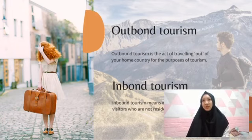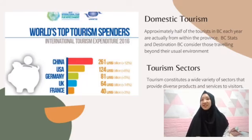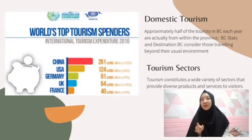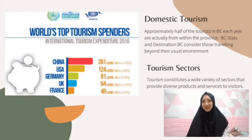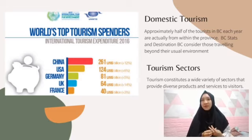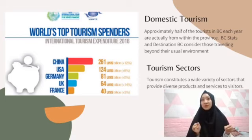Inbound tourism means visits to a country by visitors who are not residents of that country. Outbound tourism means visits by residents of a country outside that country. The third is domestic tourism. Approximately half of the tourists in BC each year are actually from within the province. BC Stats and Destinations BC consider traveling beyond the usual environment — more than 18km from home — for business or pleasure to be tourists. The last is tourism sectors, which constitute a wide variety of sectors that provide diverse products and services to visitors, but also provide products and services to local residents.